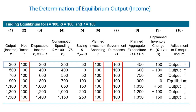The planned aggregate expenditure AE equals C plus I plus G, so 250 plus 100 plus 100 equals 450. The unplanned inventory change is Y minus AE: 300 minus 450 equals minus 150. This means in this economy we are consuming more than we are producing, so inventories are decreasing. As a reaction, firms will increase output. This is why we are not at equilibrium — there is a tendency to change.